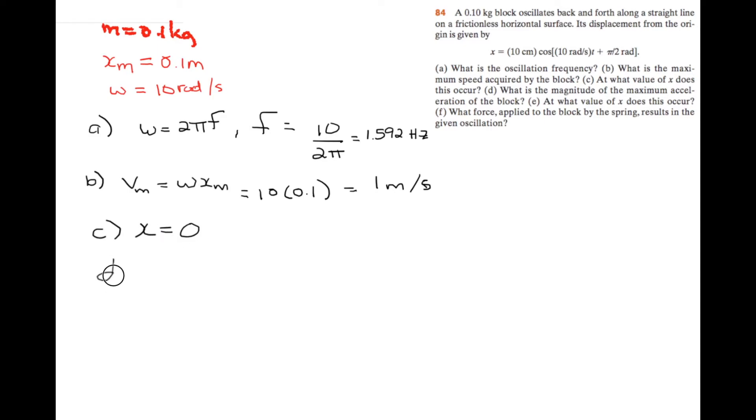For d, it's asking us what's the maximum acceleration. And acceleration amplitude is equal to angular frequency squared times the amplitude. And this is 10 squared times 0.1, and this gives us 10 meters per second squared.